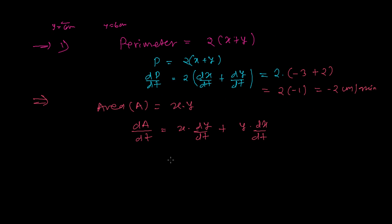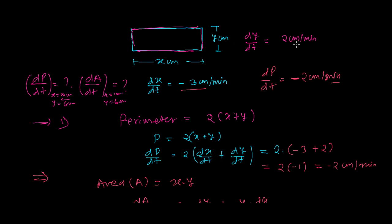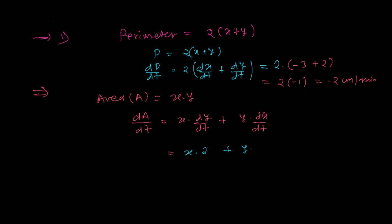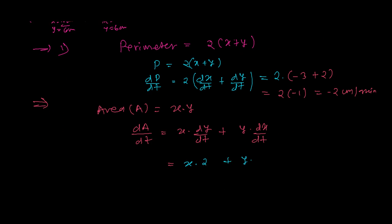We know dy over dt is 2 cm per minute and dx over dt is minus 3 cm per minute. So substituting: dA over dt equals x times 2 plus y times minus 3, which gives us 2x minus 3y.